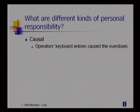The first kind we might say is causal responsibility. The operator's keyboard entries caused the overdose. When the operator typed commands on the keyboard, that led directly to the overdoses. We might also say the hurricane was responsible for blowing down the trees. That's a causal form of responsibility.